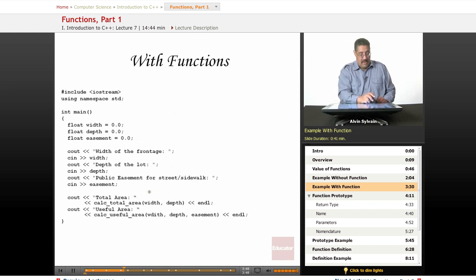And we get the useful area. We're passing in the width, the depth, and the easement. And this will do its calculation, the functions will do whatever calculations based on the parameters you passed in. And it will return a value which will be used in this expression. And in this particular case, it's printing the value out.